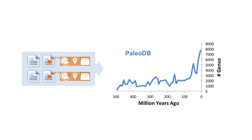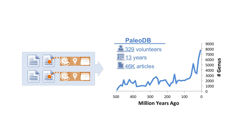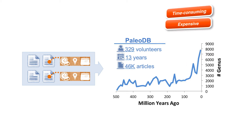Over the last 13 years, 300 volunteer paleobiologists read more than 40,000 documents and manually compiled a database called PaleoDB to produce a high-resolution biodiversity curve. Every day, expert paleobiologists manually extract data from published resources and enter them into databases. This is a time-consuming, expensive, and rate-limiting step.